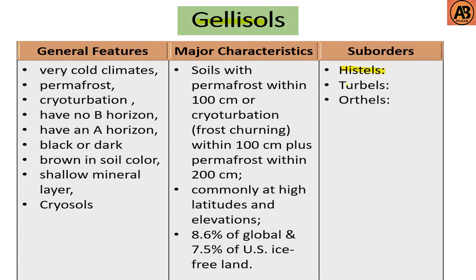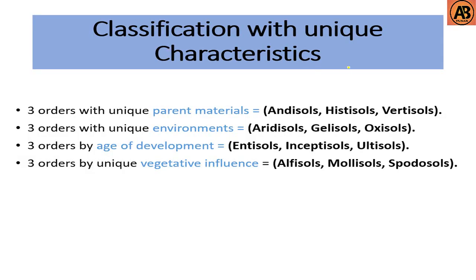The sub-orders of Gelisols are Histels, Turbels, Orthels, etc. Here are the major characteristics and general features of Gelisols. In summary, three orders are classified by unique parent materials: Entisols, Histosols, and Vertisols. Three orders are by unique environments: Aridisols, Gelisols, and Oxisols. Three orders are by age of development: Entisols, Inceptisols, and Ultisols. Three orders are by unique vegetative influence: Alfisols, Mollisols, and Spodosols. That's all for today — see you in the next video, thanks for watching.